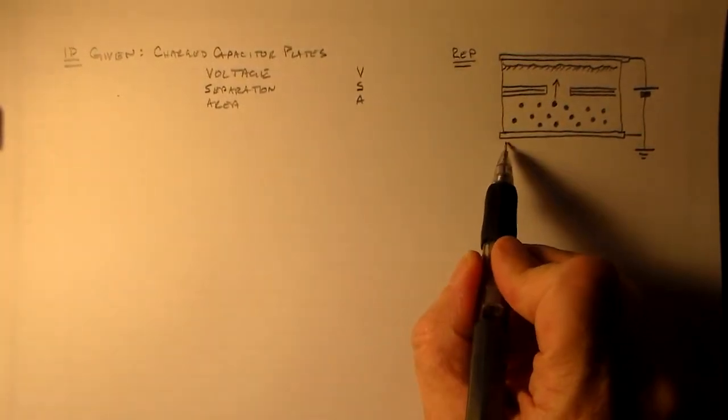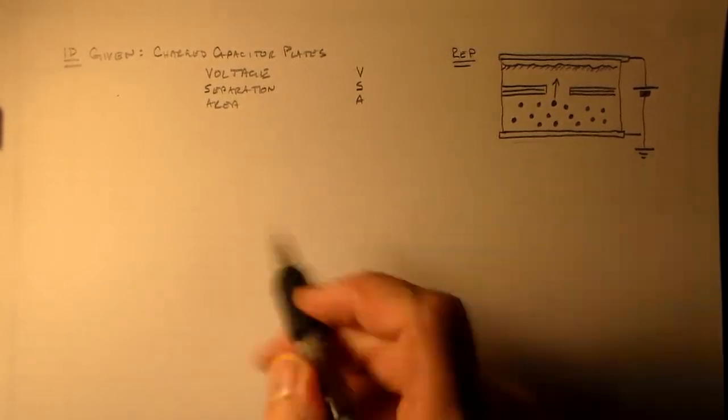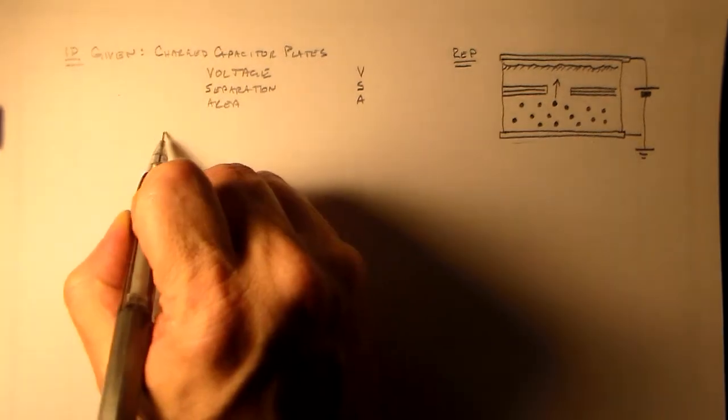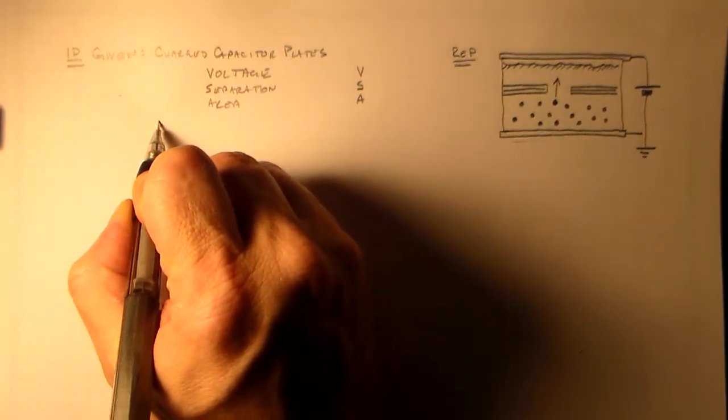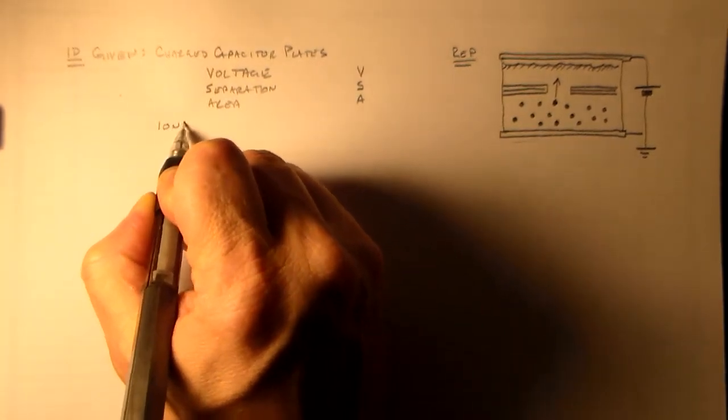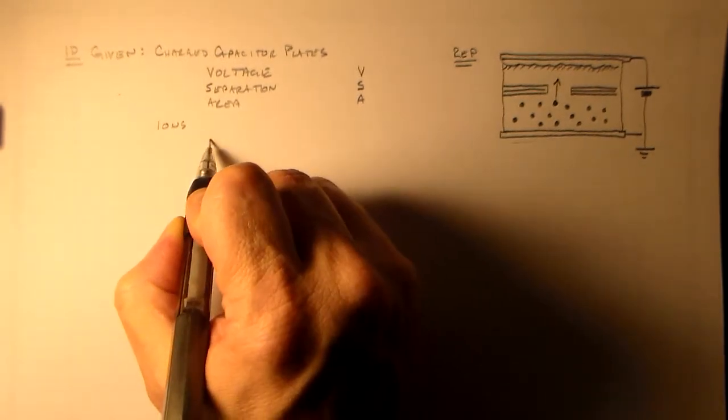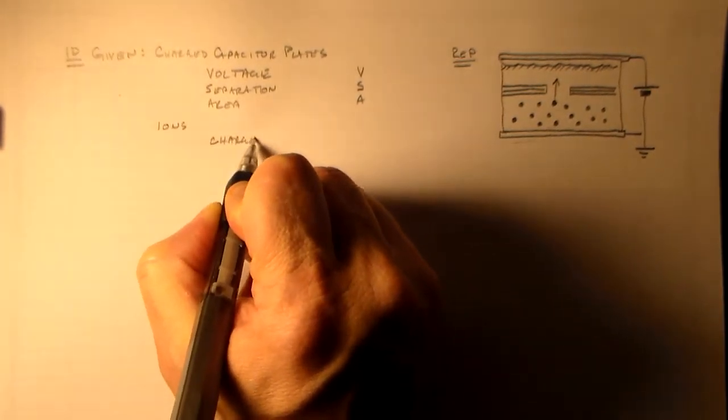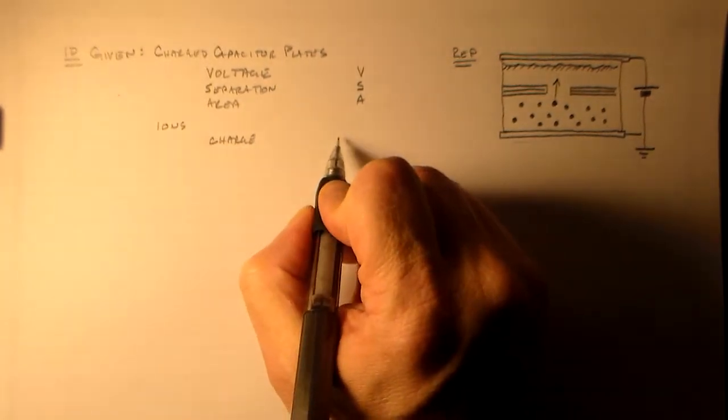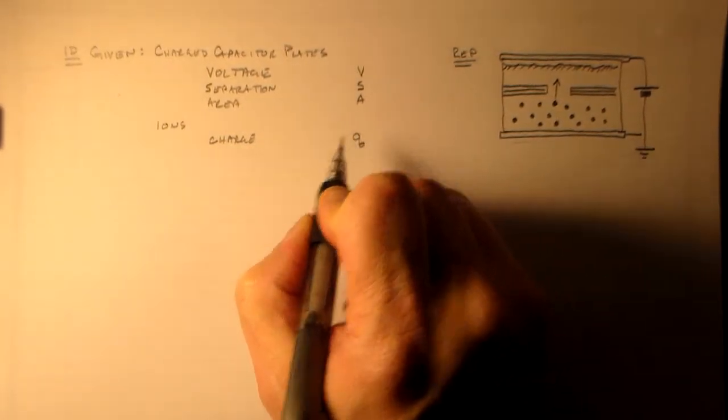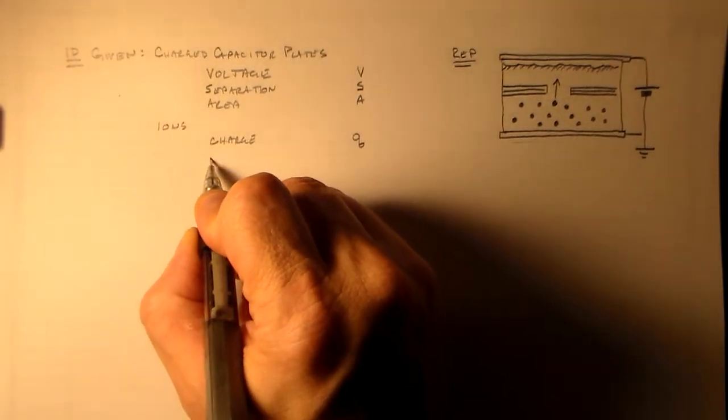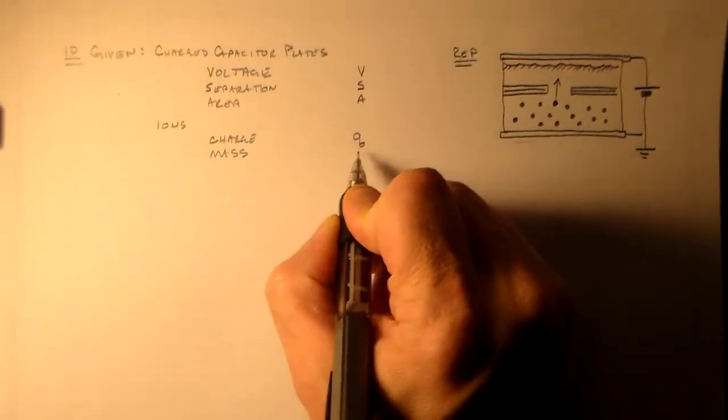This is the square root of A, more or less. We have ions and those ions have a charge of Q and a mass of M.